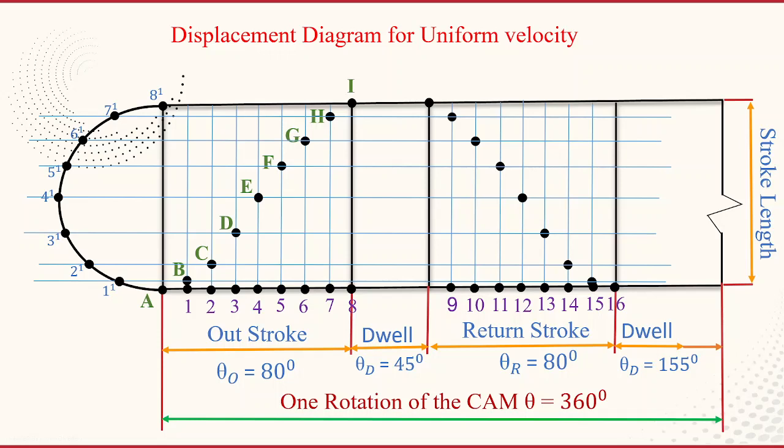Similarly for the return stroke also, you mark the intersection points and name these points J, K, L, M, N, O, P, Q, R. Then simply join all the points start from A. You can join all the points, then you can obtain the curve.